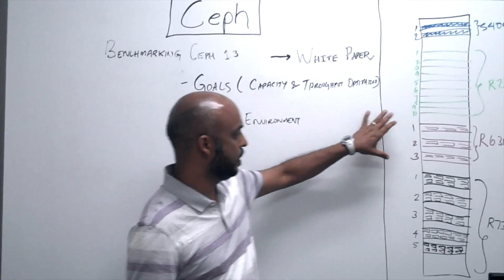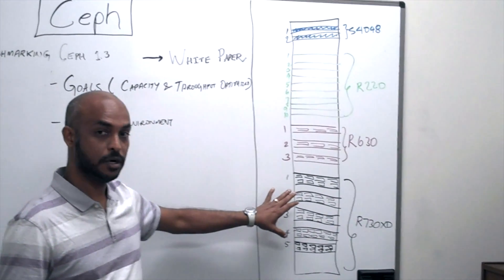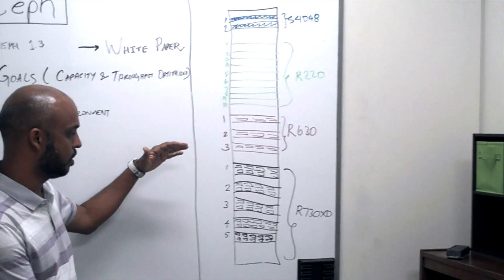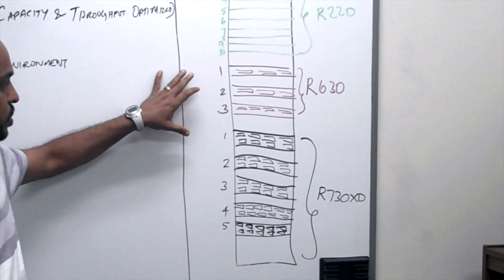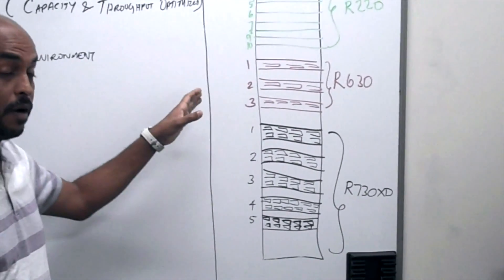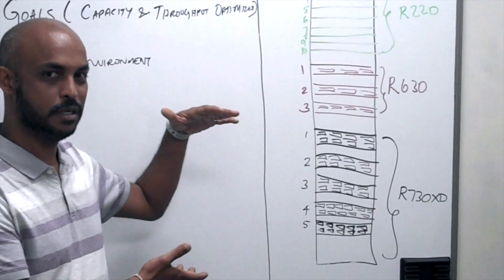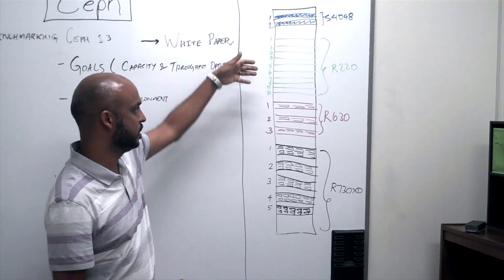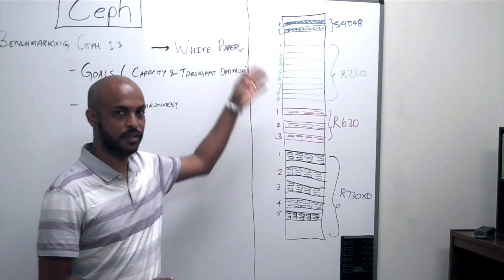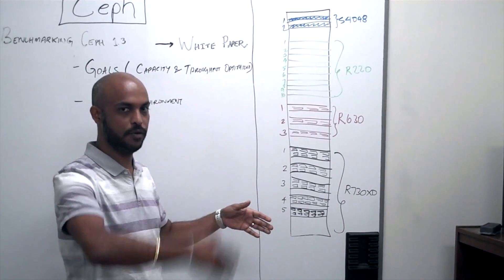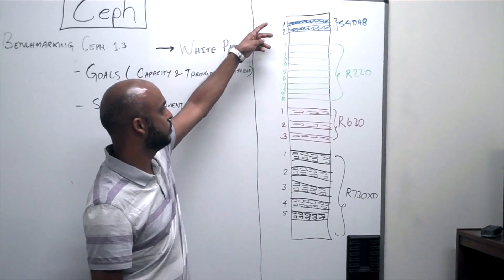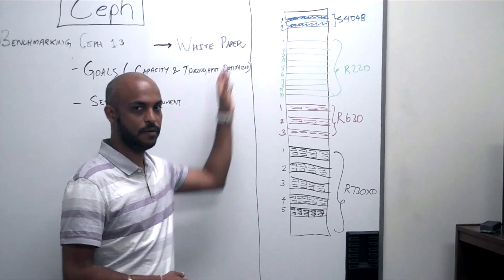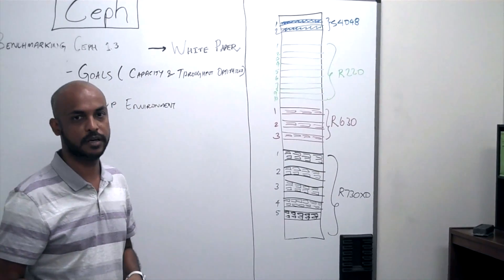So can you show us the test environment you used? Sure. We have five Dell PowerEdge R730XDs that made up our Ceph node cluster. We chose three Dell PowerEdge R630s that made up our management node cluster. The clients we used were ten Dell PowerEdge R230s, used in varying degrees of load. And finally, we used the Dell S4048 switches — one for the private and one for the public facing part of the network.